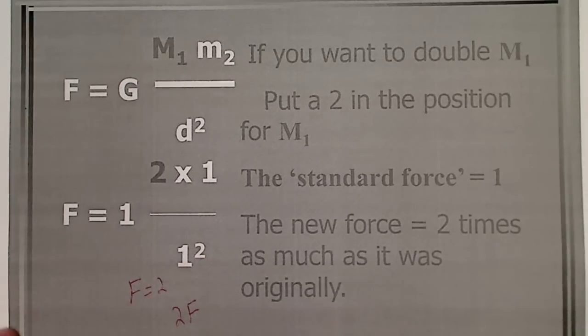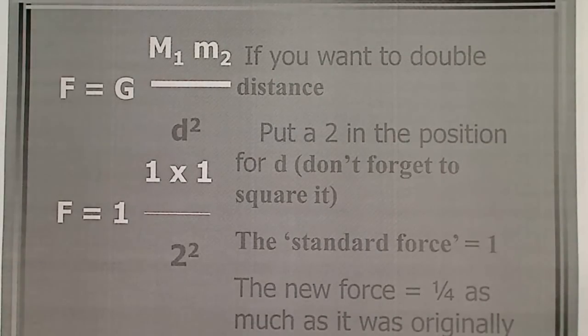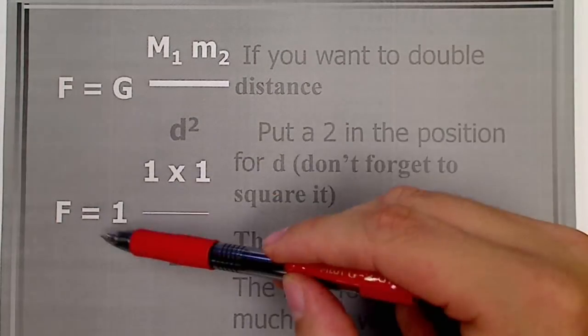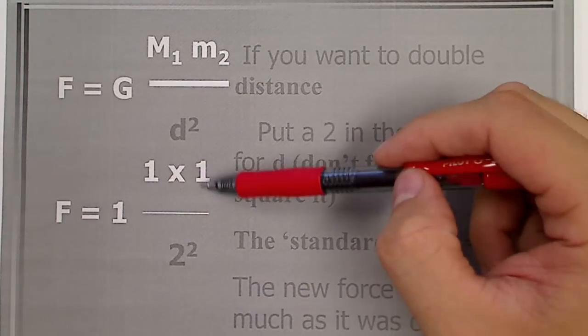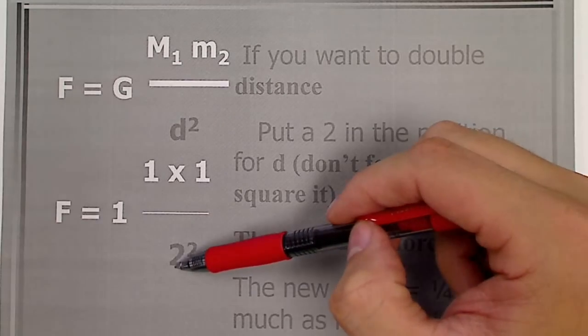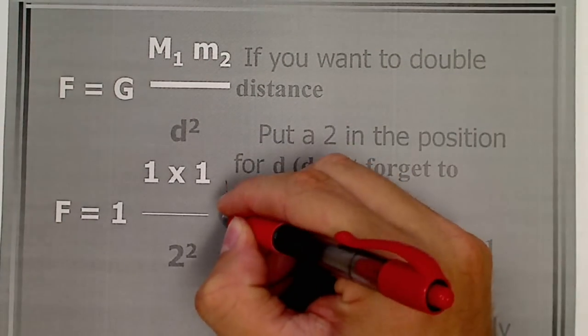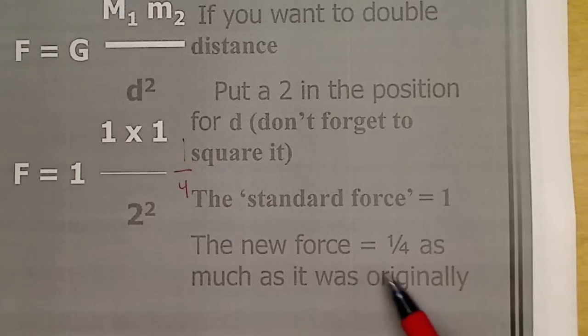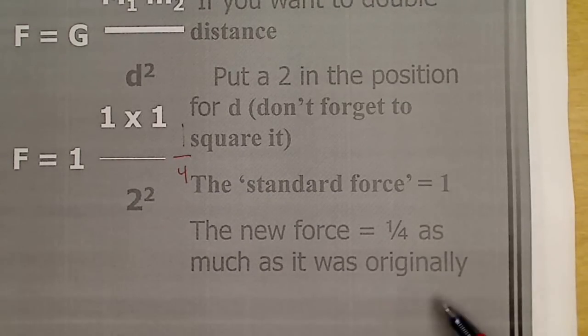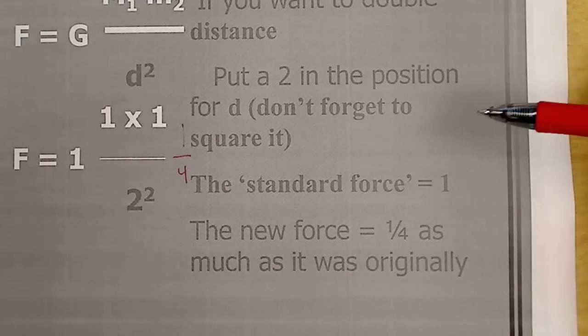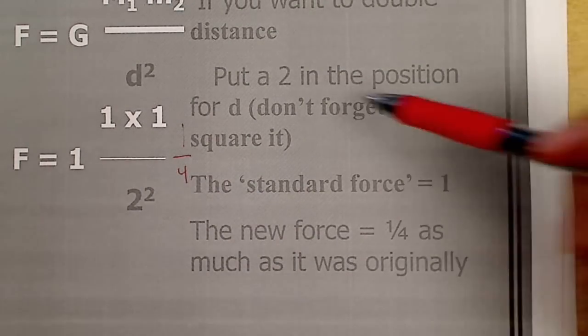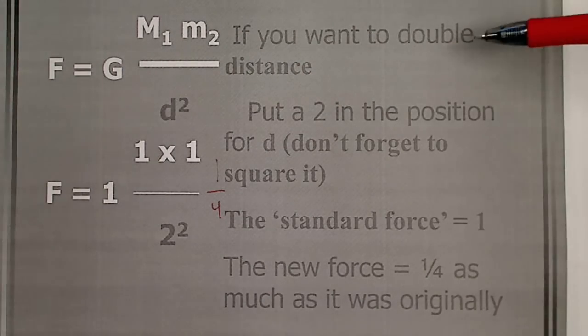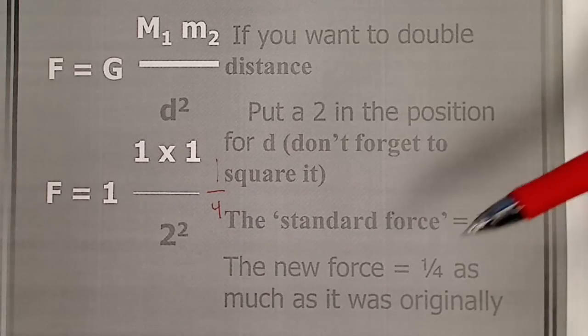That might seem really obvious. Because double, obviously, it's going to get bigger. Well, it depends. We have to follow the equation. If you want to double distance. So, now we do the same thing. We still have the standard G, standard mass. Now, the distance is doubled. And this is 2 squared. So, when we have 1 over 2 squared, 4. The new force is 1 fourth as much as it was originally. So, we double distance 1 fourth the force. This all has to do with the equation. That's why we need to do it this way. We can't only listen to the words. Because doubling distance gives us a smaller force, actually.